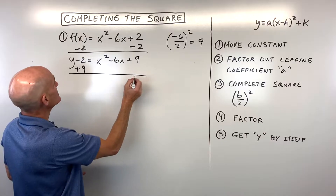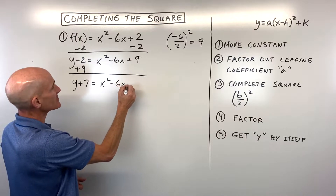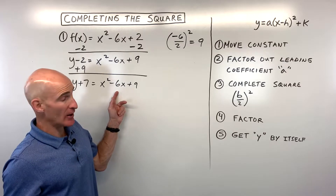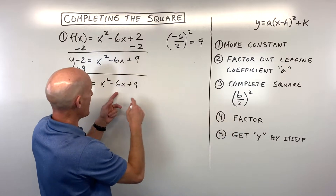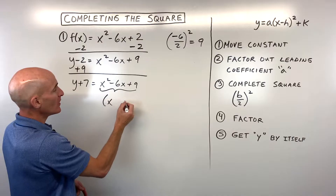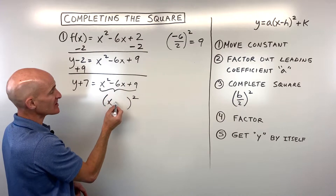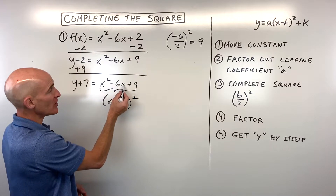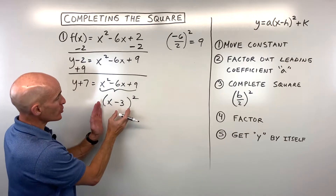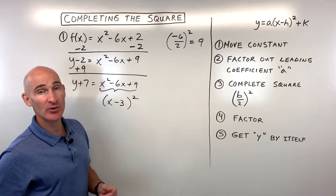Now let's simplify: we've got y plus seven equals x squared minus six x plus nine. We created a perfect square trinomial. We're going to factor it — it always factors to x and then half of the b value, the quantity squared. Half of negative six is negative three, so this factors as x minus three squared. You can check your work by multiplying x minus three times x minus three to get back the original trinomial.